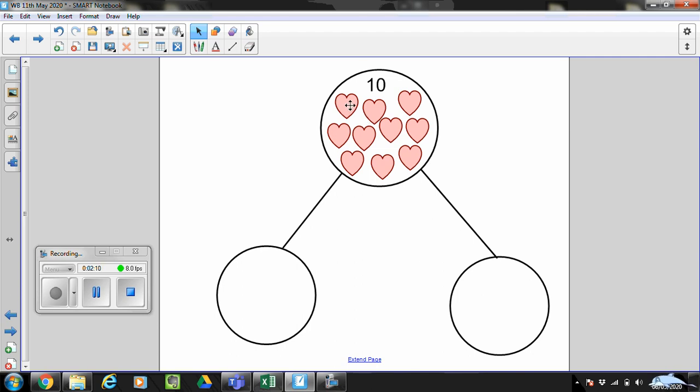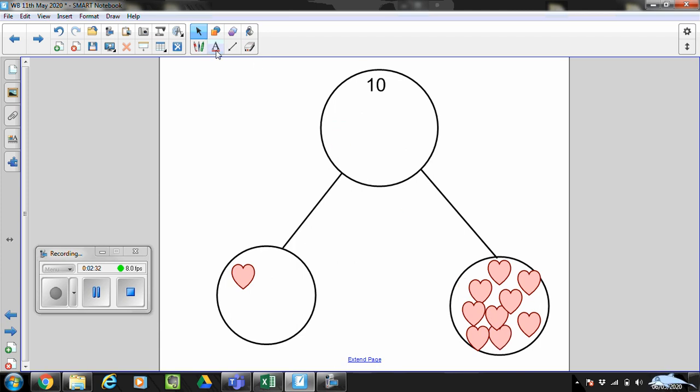Let's do the first few together. I'm going to put 1 here and I'm going to put the rest in this part. I'm going to count them as we go. So we've got 1, 2, 3, 4, 5, 6, 7, 8, 9. I have got 9 as a part and 1 as a part. 10 is my whole, 9 as a part, 1 as a part.